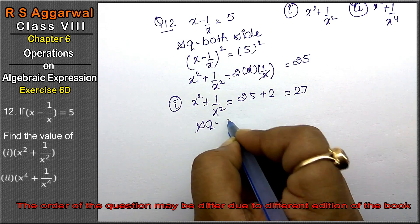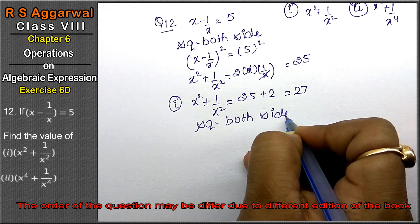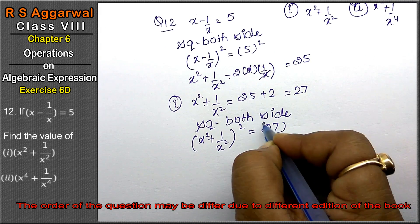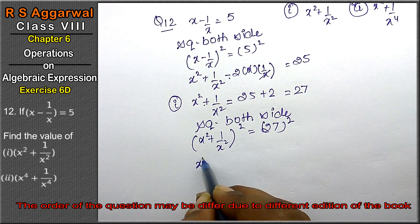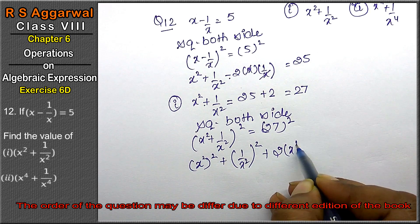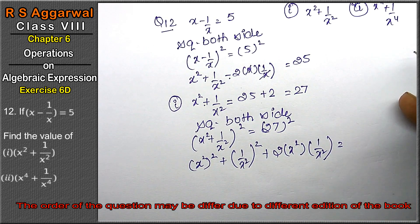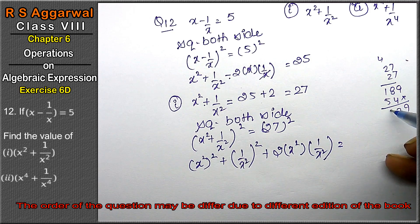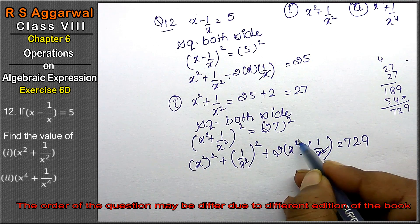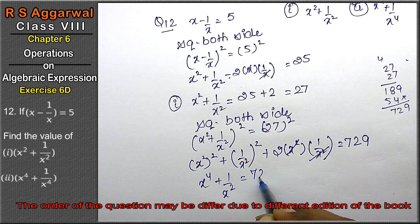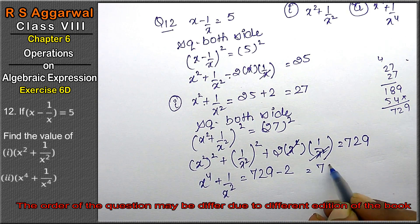For the second part, squaring again: (x² + 1/x²)² = 27². So a² + b² + 2 × x² × (1/x²) = 729. Then x⁴ + 1/x⁴ + 2 = 729. So x⁴ + 1/x⁴ = 729 - 2 = 727, which is the answer.